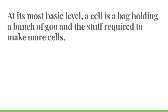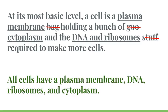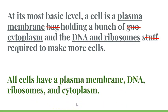At its most basic level, a cell is a bag holding a bunch of goo and the stuff required to make more cells. In actual terms: a cell has a plasma membrane, which is the bag; cytoplasm, which is the goo; and DNA and ribosomes, the stuff required to make more cells. All cells have a plasma membrane, DNA, ribosomes, and cytoplasm, but beyond that they can be quite diverse.